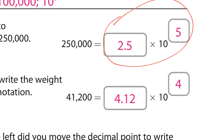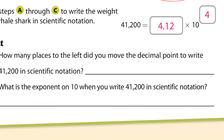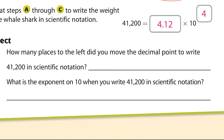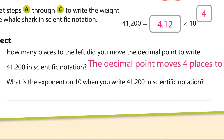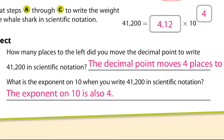How many places did you move the decimal? It was moved 4 places. The exponent on 10 is also 4. So the exponent is telling you how many times you have to move the decimal — not how many zeros you have. Notice here you have two zeros, but the exponent was 4.